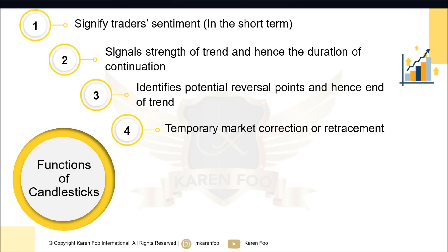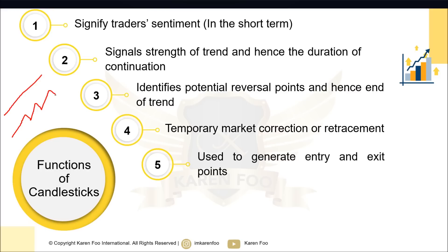Number four: candlesticks allow you to identify temporary market corrections and retracements, because a trend doesn't just go up in a straight line — it goes up, retraces, goes up, retraces. The same applies to a bearish trend. Candlestick signals can also help you identify when these temporary corrections will take place.